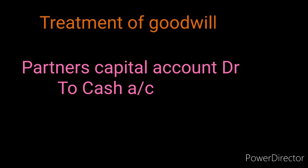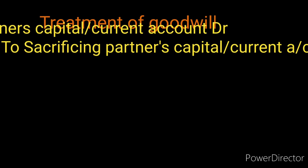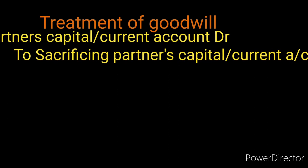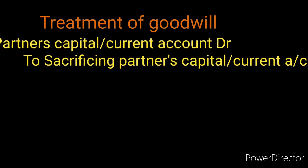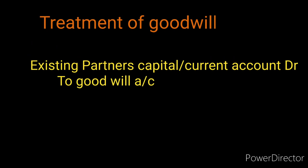Existing goodwill: if any goodwill exists in the books of accounts on the balance sheet, it should be written off by debiting all existing partners' capital accounts and crediting goodwill. Then new goodwill brought into the business will be given to the sacrificing partners as per their sacrificing ratio. When the new partner does not bring goodwill money, the new partner's capital or current account is debited and the sacrificing partners' capital or current accounts are credited.